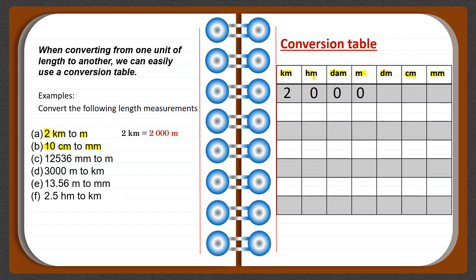When you have two digits, the last digit is always placed under the given unit column. First locate the given unit, which is centimeters. Then fill in the digits, placing the last digit under centimeters. So the last digit is zero and it goes under centimeters, and then the one is placed before the zero — giving us 10 centimeters.